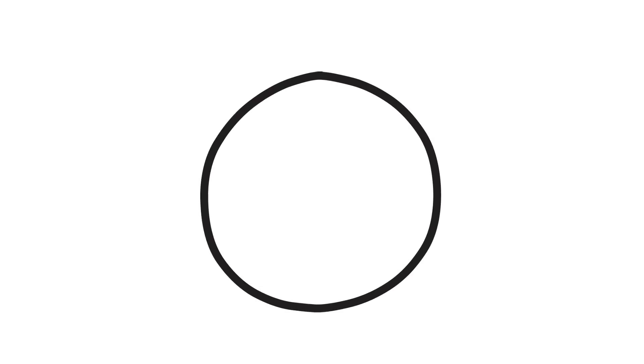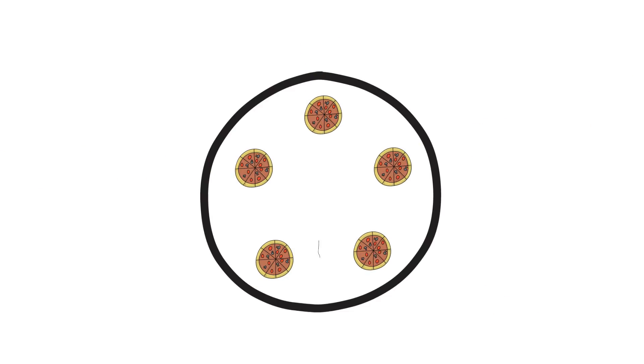There's a very famous software engineer who laid out many fundamentals of software engineering called Dijkstra, and he wanted to illustrate this problem to other people. He came up with the idea of the dining philosophers. The setup is: there are five philosophers sitting at a round table, and each one has a bowl of food in front of them.